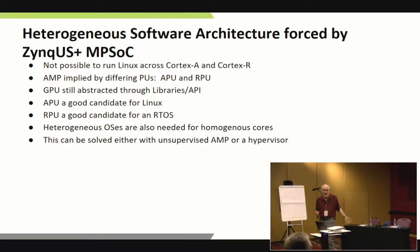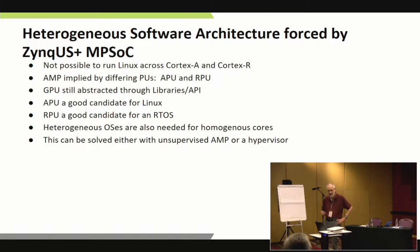A heterogeneous architecture is practically forced on people by the complicated chips that Thomas was describing earlier. You can't run Linux on Cortex-R. You really can't run the same OS on the R's and the A's. You certainly can't run conventional symmetric multiprocessing. APUs are a good candidate for Linux; RPUs are a good candidate for an RTOS or safety-certified system. You could solve this with a hypervisor or unsupervised AMP, but the safety folks don't like unsupervised AMP.